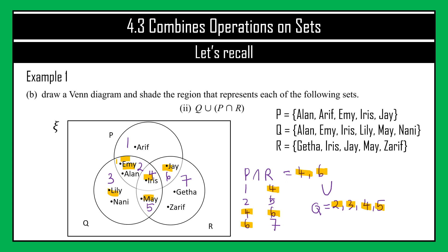So shade sections 2, 3, 4, 5, and 6. Make sure you shade neatly and tidily — it actually helps the mood of the marker and makes it easier to assess your work. I'm done shading my region, and this is the final answer for question B number 2.